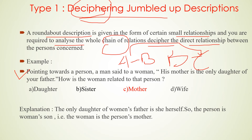Let me take an example of Type 1. Pointing towards a person, a man said to a woman: 'His mother is the only daughter of your father.' How is the woman related to that person? The answer is: mother. To solve this question, instead of just reading it, make a picture or drawing to figure it out.